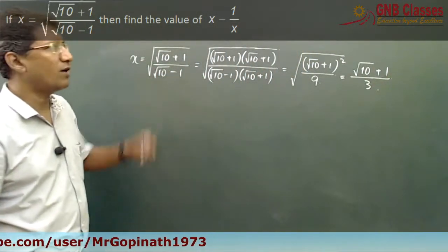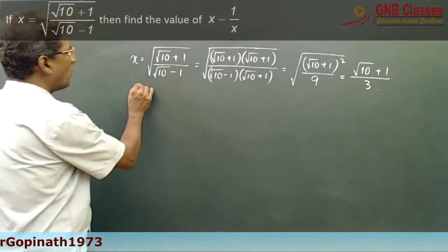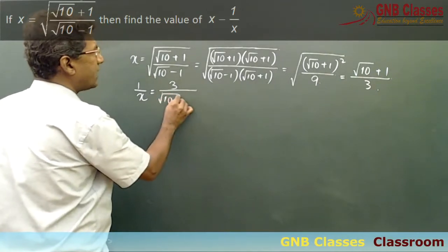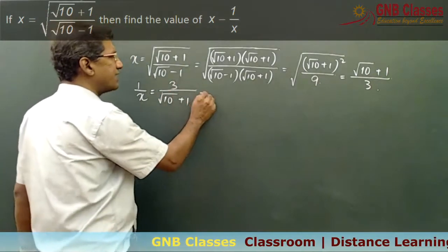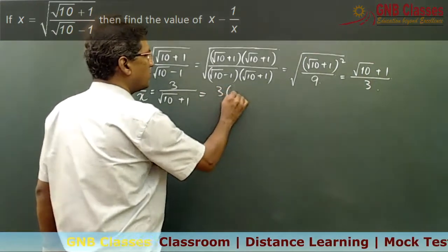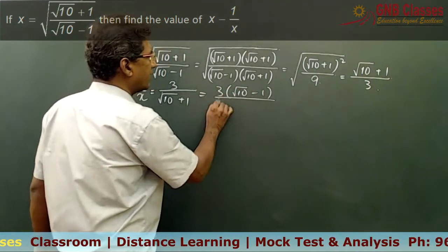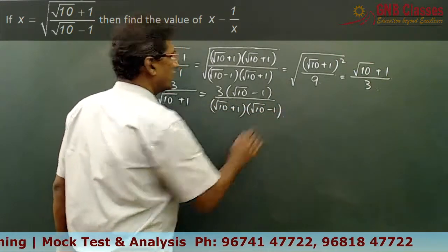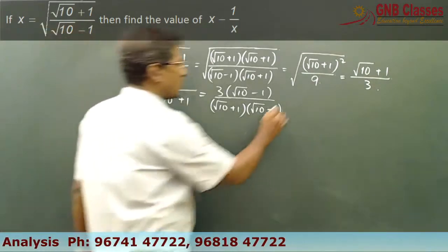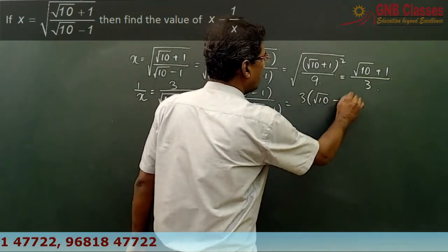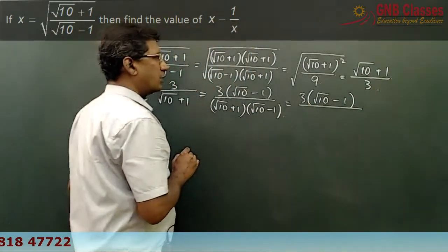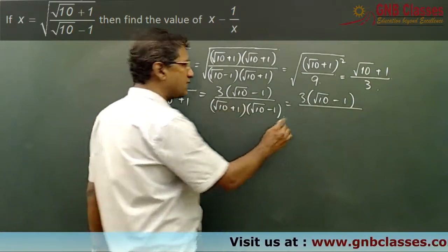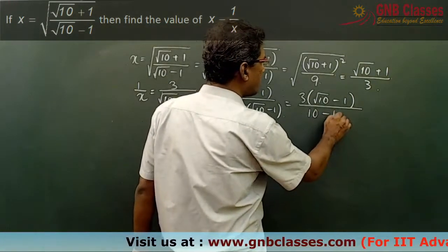Now, what will be 1 by x? Your 1 by x will be 3 by under root 10 plus 1. Again we are rationalizing this, multiplying numerator and denominator by its conjugate. So in the denominator we are getting root 10 plus 1 into root 10 minus 1, and in the numerator we are getting 3 times root 10 minus 1. The denominator is a plus b into a minus b, so it is a squared minus b squared.